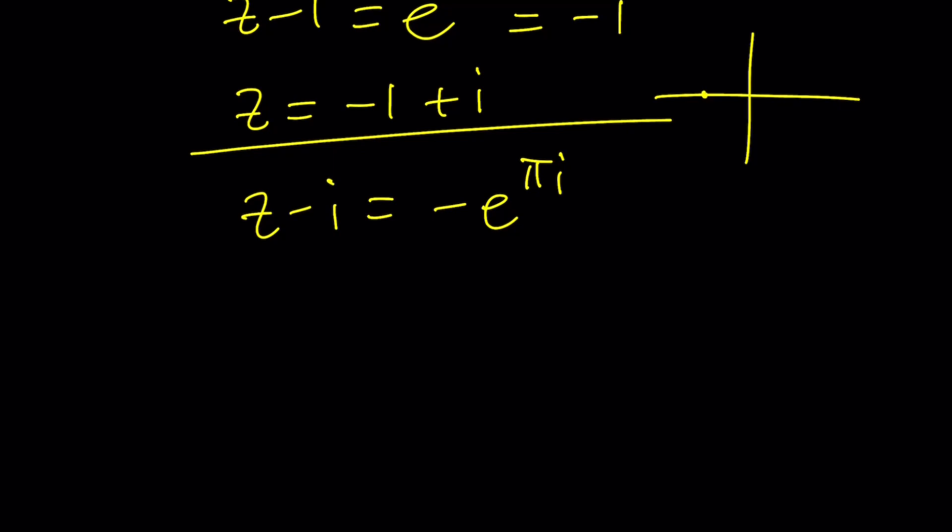And now, e^(πi) is negative 1, remember, because on the complex plane, you're talking about this number. So that's negative 1. So with the negative, it's going to be a positive 1, and we're going to get z = 1 + i as the other solution.